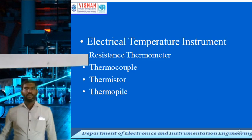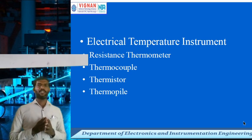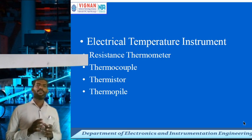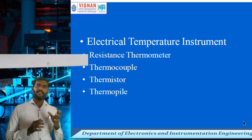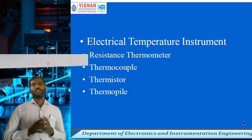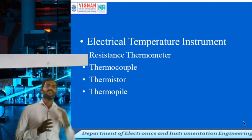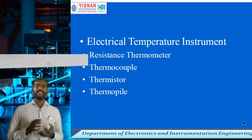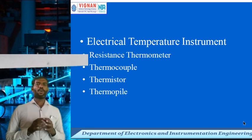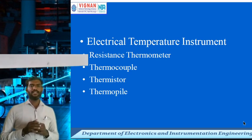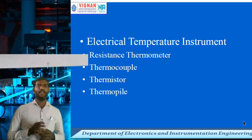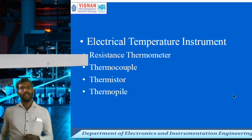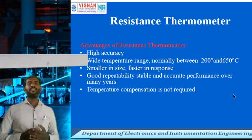Different types of electrical temperature measuring instruments are used. They are classified into different types: resistance thermometer, thermocouple type, thermistor type, and thermofile. Resistance thermometer is a positive temperature coefficient — when the temperature increases, resistance also increases. Thermistor is a negative temperature coefficient — when temperature increases, resistance decreases. Thermocouple is formed by two dissimilar metals, where a hot junction and cold junction are formed. Thermofile is when a number of thermocouples are connected together.